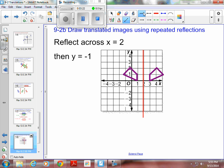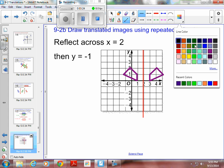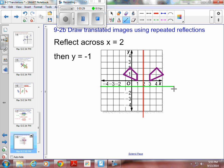And then I want to reflect it across a line that is Y equals negative 1. So let's grab like a green line for that. Y equals negative 1 would be here. So I'm going to take this shape.